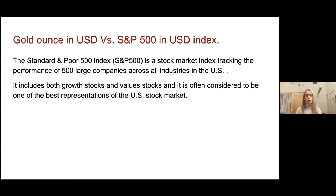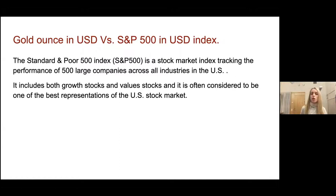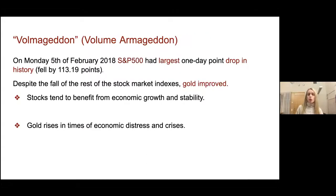Our second showcase is about gold and the S&P 500 index, which tracks the performance of 500 large companies across all industries in the U.S. It includes both growth stocks and value stocks and is often considered one of the best representations of the U.S. stock market. We're going to look specifically at the 'volatility armageddon,' which was the largest one-day drop in history recorded for the S&P 500 index. It occurred in February 2018, and despite the fall of the rest of the stock market, gold improved. Generally speaking, stocks tend to benefit from economic growth and stability while gold rises in times of economic distress and crisis.